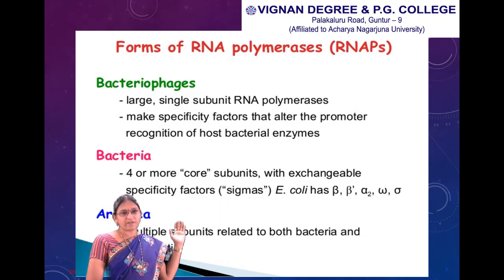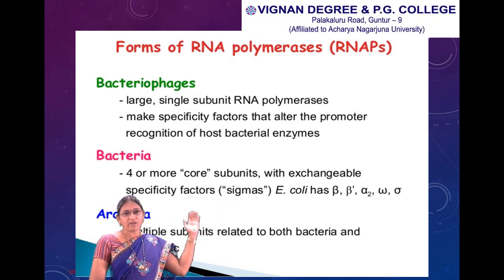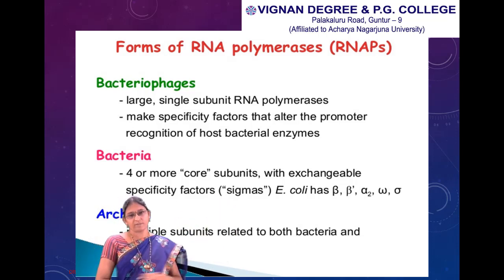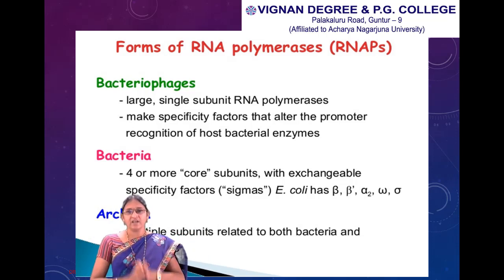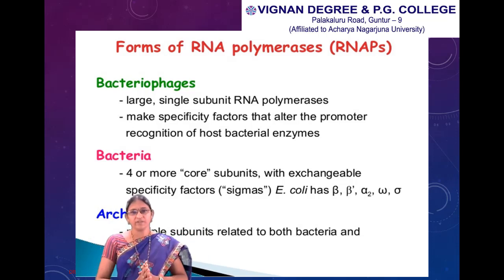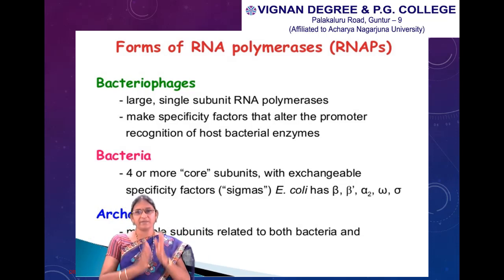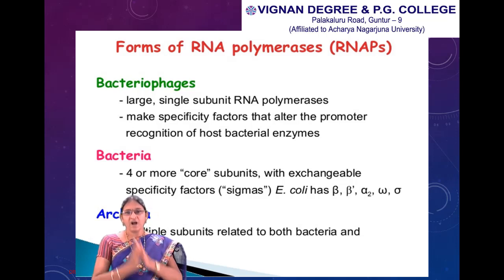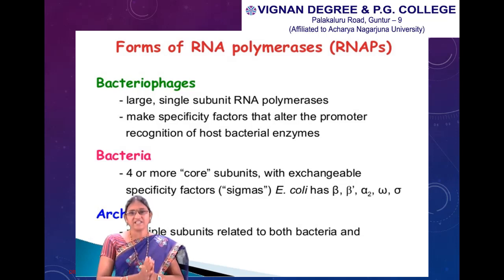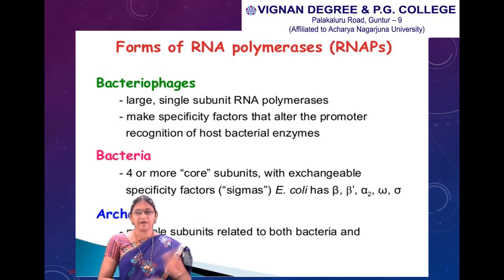Bacterial polymerases have four or more subunits with exchangeable specificity factors. The four subunits are beta, beta prime, alpha, and omega, and the specificity factor is sigma.